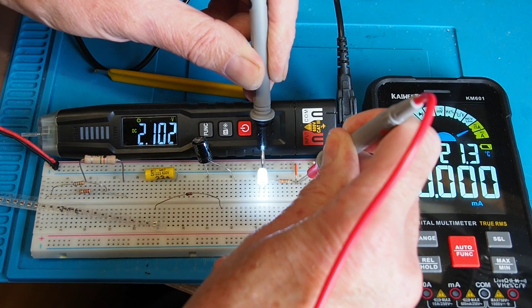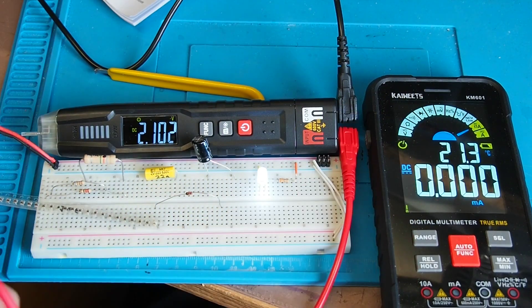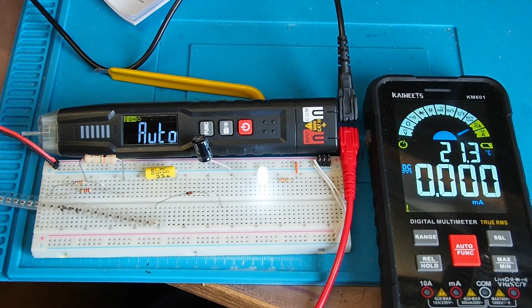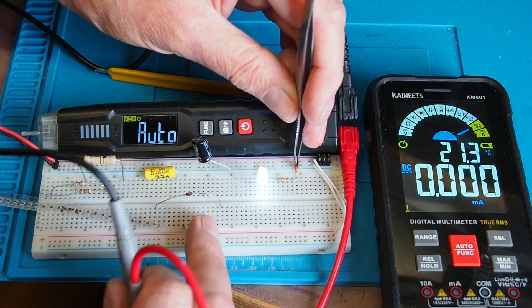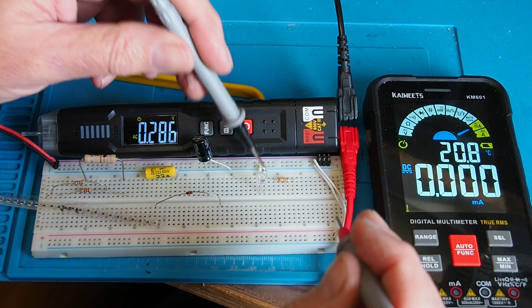It's saying 2.102 so I'm going to call that 2.1 volts. 2.1 volts across that resistor. Now what I'm going to do is take out the link so I can just measure the resistance of that resistor.